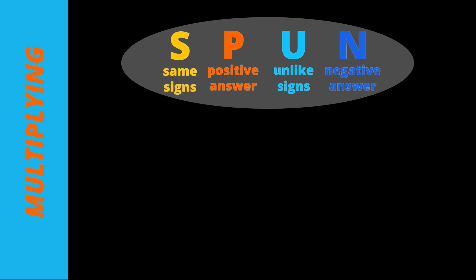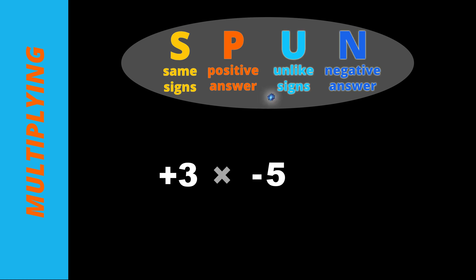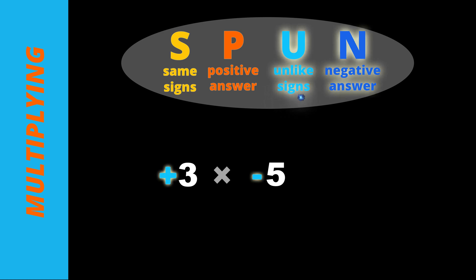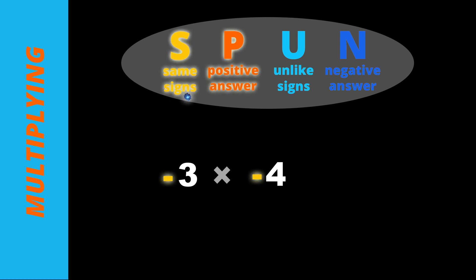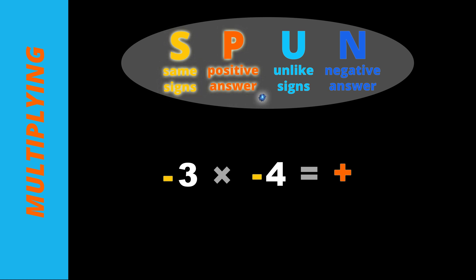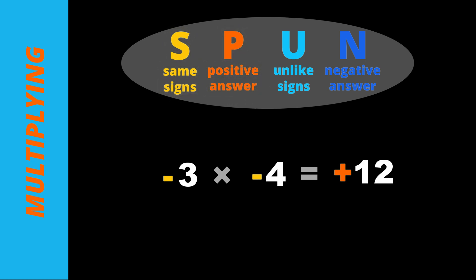Let's do some more multiplying examples. Positive 3 times negative 5: there are unlike signs, so the answer is negative. 3 times 5 is 15, so the final answer is negative 15. What about negative 3 times negative 4? The signs are the same — they are both negative — so the answer is positive. 3 times 4 is 12, so the answer is positive 12. Negative 3 times negative 4 is positive 12.